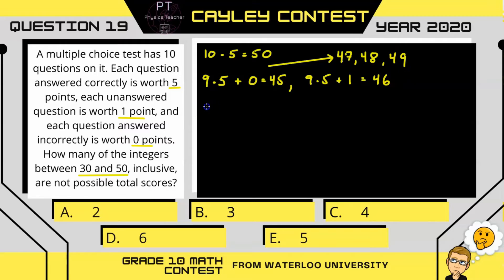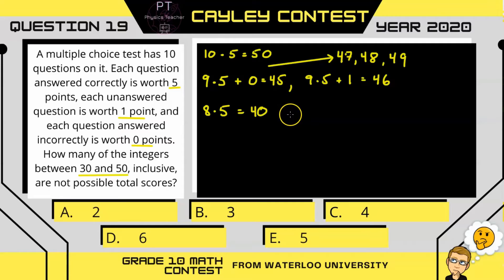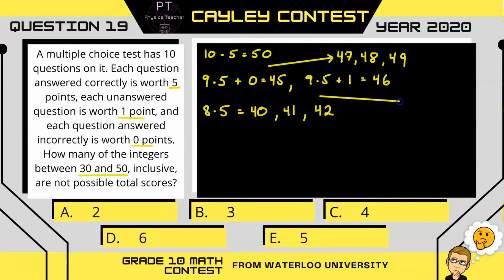Now let's say you get 8 right. If you get 8 right and all of the other ones incorrect, that's a total score of 40. But you could also get one of them as unanswered, which would give you 41, or another one unanswered, which would give you 42. Notice that we are missing the scores 43 and 44.